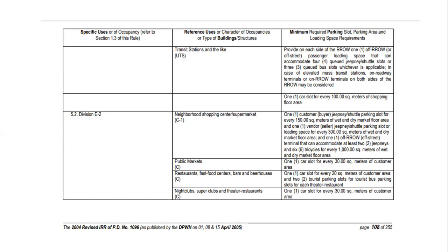For shopping malls — Division E2 — one car slot is required for every 100 square meters of shopping floor area. For shopping centers, supermarkets, and public markets: one customer/buyer jeepney shuttle parking slot for every 150 square meters of wet and dry market floor area; one off-road terminal to accommodate at least two jeepneys and six tricycles for every 1,000 square meters of market floor area.